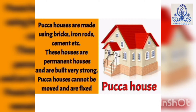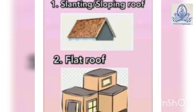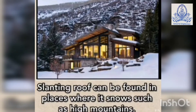Pakka houses cannot be moved and are fixed. Types of roofs: Number 1, slanting or sloping roof. Number 2, flat roof. Roofs protect the house from different weather. Slanting roofs can be found in places where it rains or snows heavily, such as high mountains.